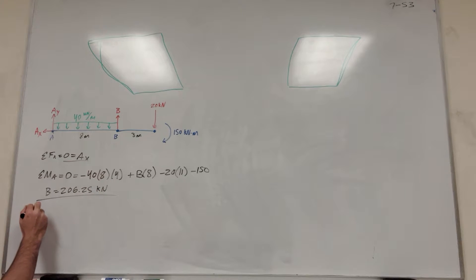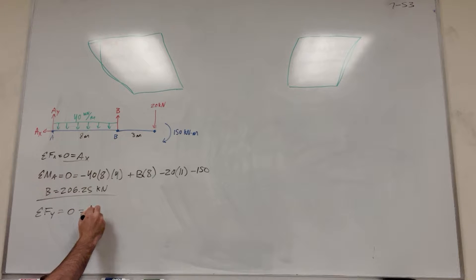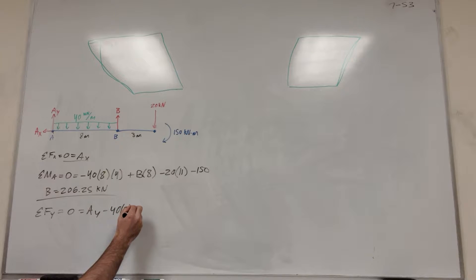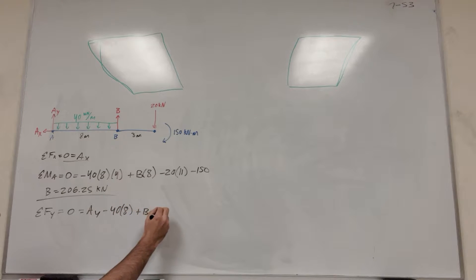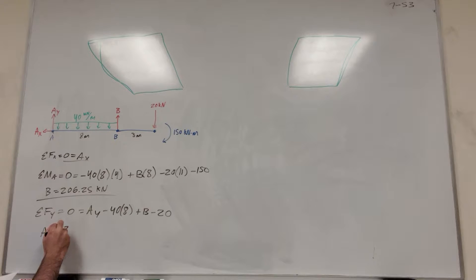So then all we have left is A of Y. Taking the sum of the forces in the Y direction: A of Y minus the distributed load — 40 kilonewton per meters times eight meters — plus B, minus 20 for that force. Solving for A of Y, you get that A of Y is equal to 133.75 kilonewtons.